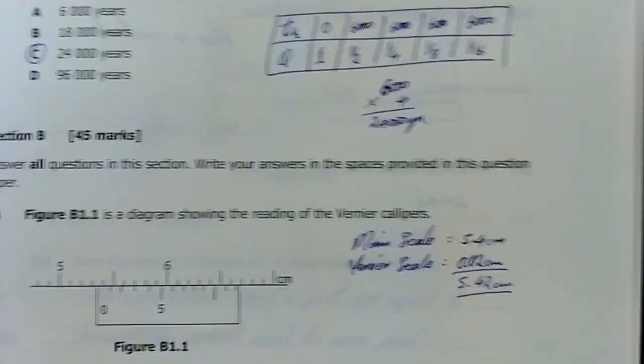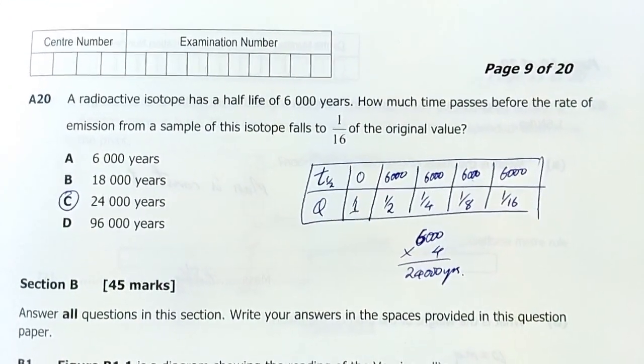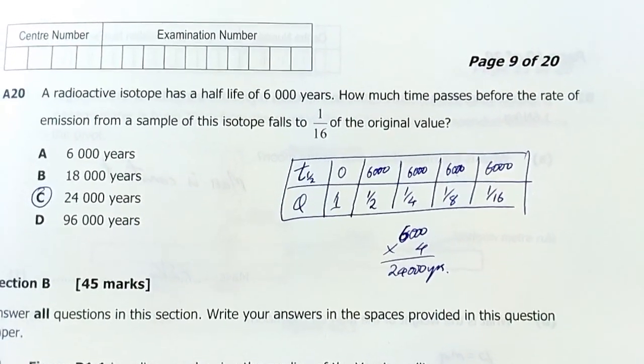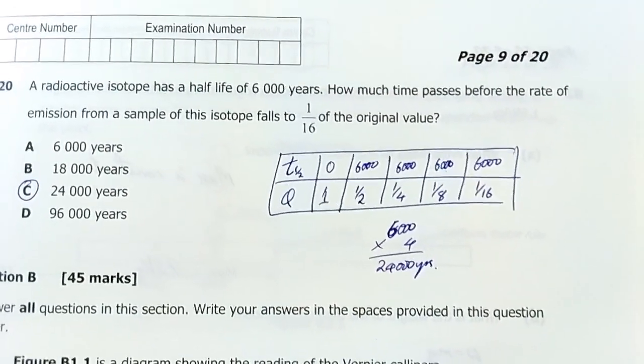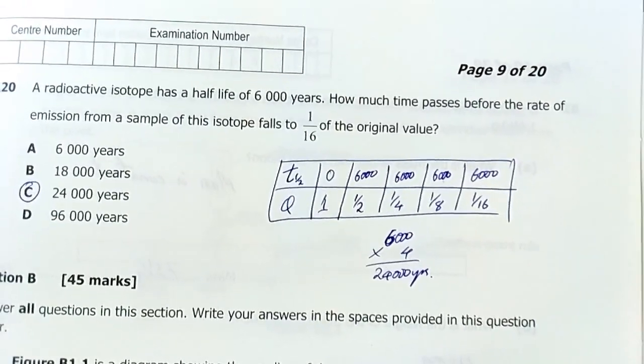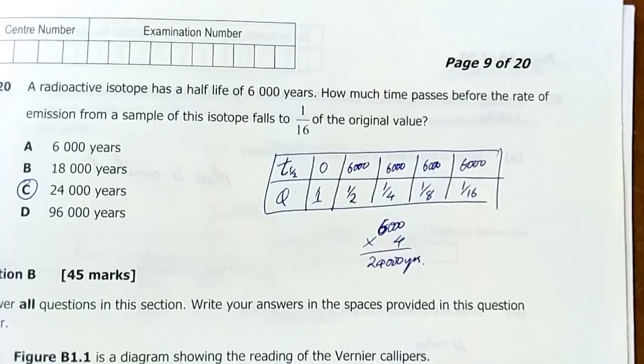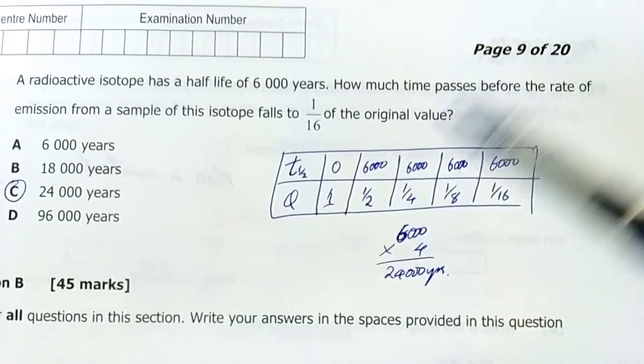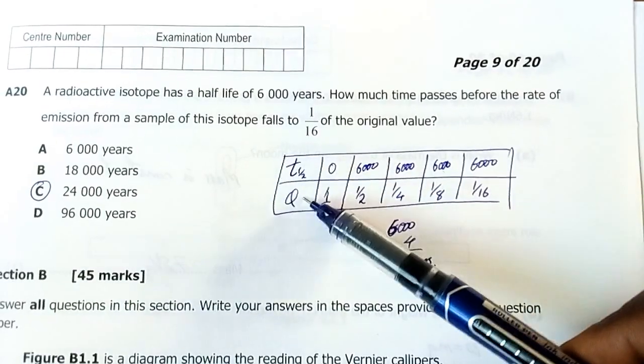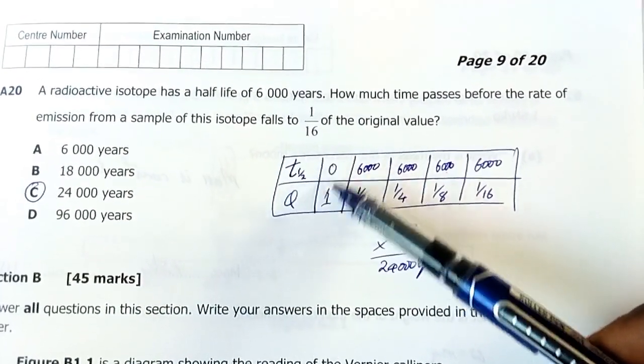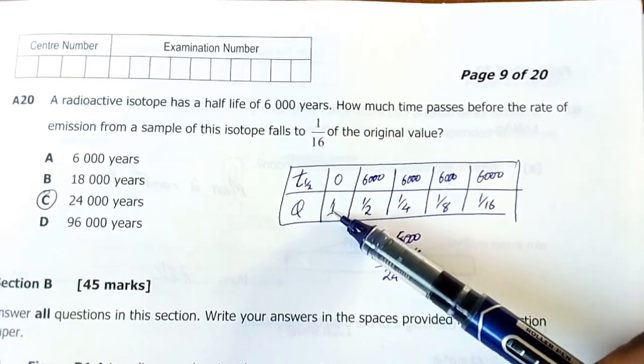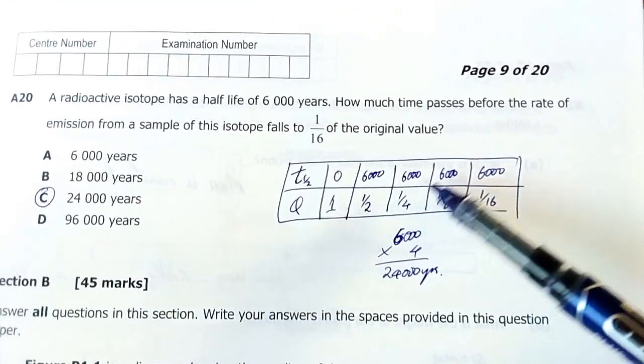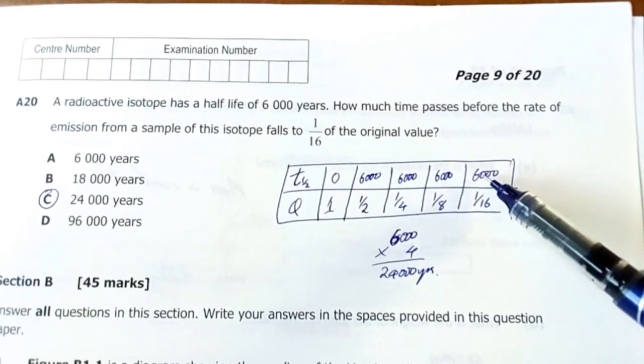The last question here is question 20: A radioactive isotope has a half-life of 6000 years. How much time passes before the rate of emission from the sample of this isotope falls to one-sixth of the original value? There is no original value here so you have to treat this as a whole, you have to use fractions. I drew this table to help me deal with this fractional way of seeing things. At the beginning when time was zero it was a whole or complete quantity. After 6000 years it went to half. After another six thousand years it went to quarter, to one eighth, to one sixteenth.